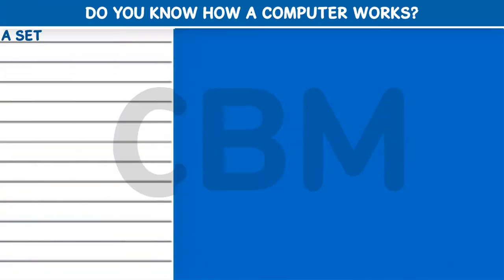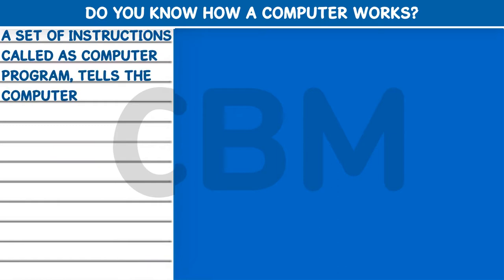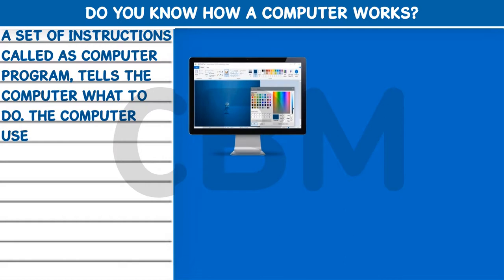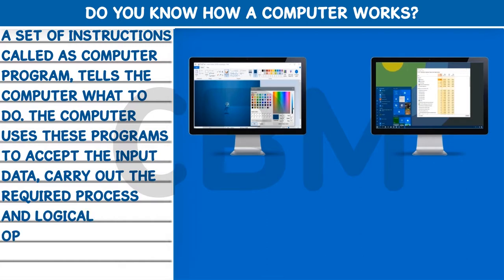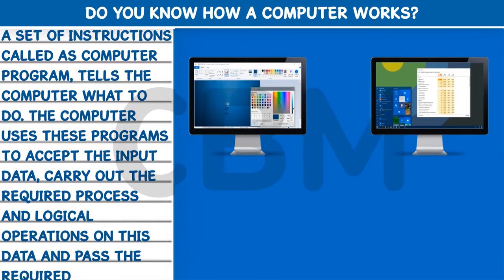A set of instructions called a Computer Program tells the computer what to do. The computer uses these programs to accept the input data, carry out the required process and logical operations on this data, and pass the required output information.